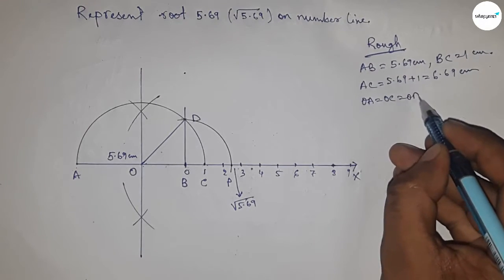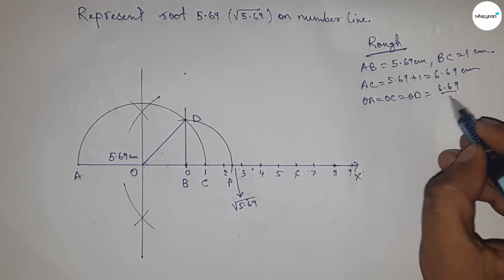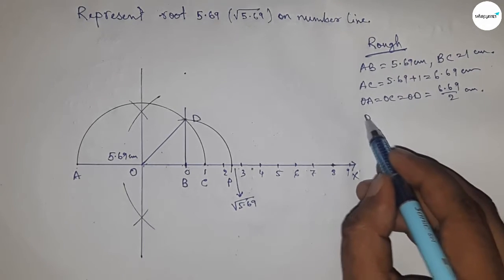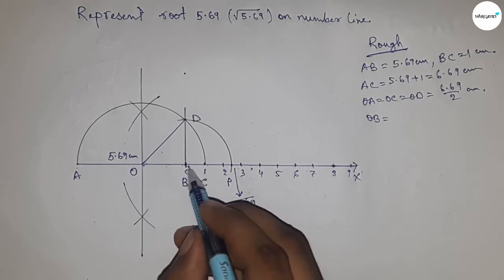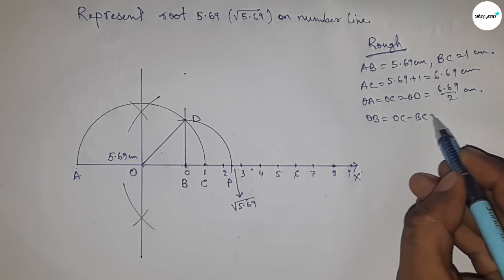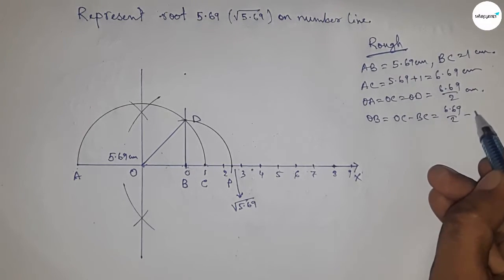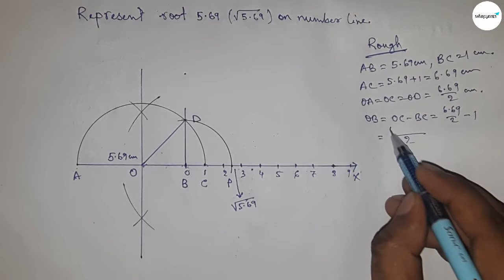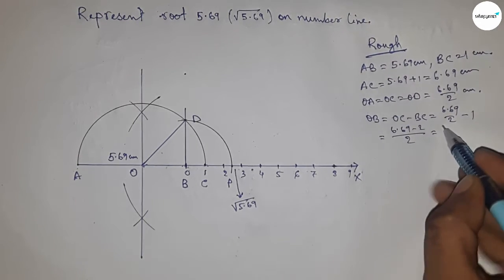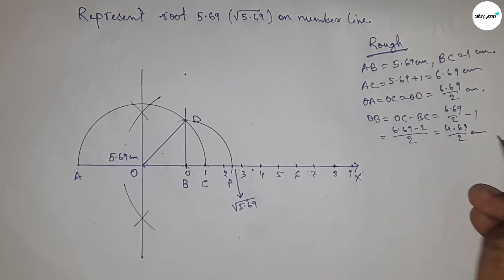Now radius OA, OC, and OD equal to 6.69 by 2 centimeter. Now distance OB equal to we can write OC minus BC. Now putting the value of OC and BC and calculating this, so this is 4.69 by 2 centimeter.